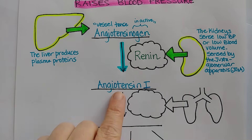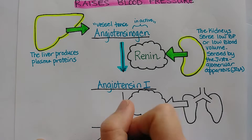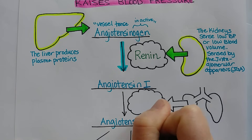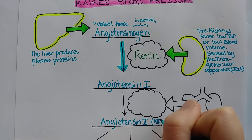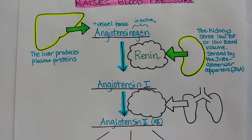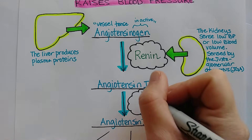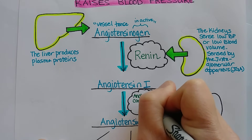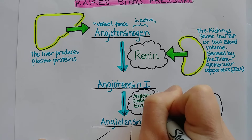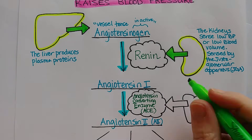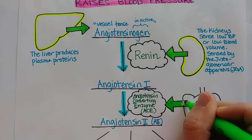This next enzyme is going to convert angiotensin 1 into angiotensin 2, sometimes just called A2. So it gets converted into its potent hormone by an enzyme called angiotensin converting enzyme — we just call it by the acronym ACE. This is made in a few places in the body, but we're drawing the lungs because that's where most of the ACE in our body comes from.